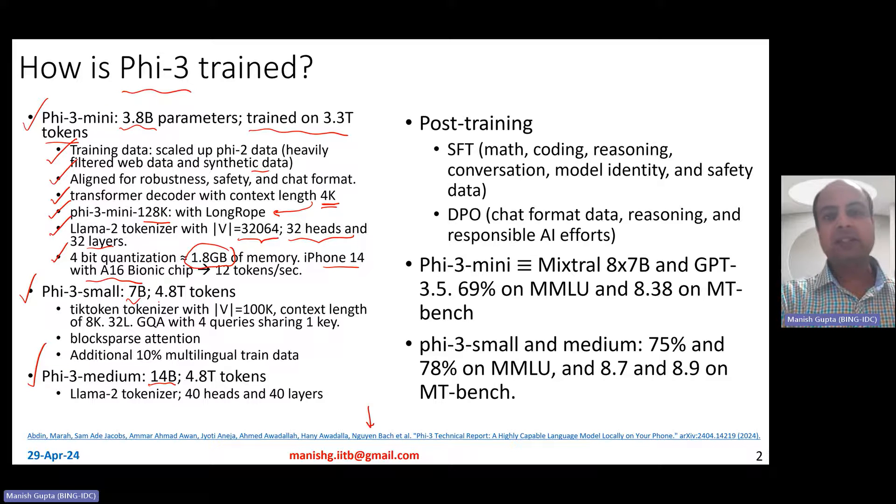Phi-3 small is a 7 billion sized model trained with 4.8 trillion tokens, slightly larger compared to Phi-3 mini. It uses tiktoken tokenizer with a vocabulary size of 100k and a context length of 8k. A 32-layer model and it also uses GQA, the group query attention with four queries sharing one key so as to make the training much more efficient.